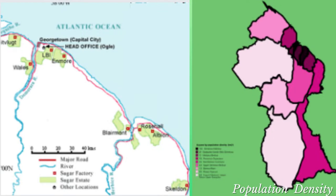The area across which the estates are located is also the area where most of Guyana's population is concentrated, as shown by the choropleth map. The darker shades on the map indicate areas of higher densities and are mainly located along the coast. Though this coastal belt only takes up five percent of the country's total land area, it is home to more than 90 percent of the country's population, meaning there is a ready supply of labor for the sugar industry.